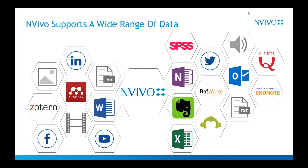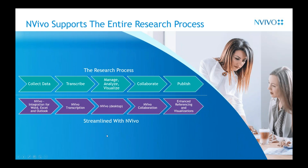I'd also like to show people all the different types of data that can come into NVivo. You have Word documents, PDF, video, audio, YouTube, social media like Facebook, LinkedIn, and Twitter. We also integrate with bibliographic software like Zotero, Mendeley, RefWorks, and EndNote, and integrate with Qualtrics and SurveyMonkey — or you can import a spreadsheet with survey results. We also integrate with SPSS. With our group of products, we're really trying to help you throughout your research process: collect data, transcribe, manage and analyze, collaborate, and then publish your dissertation, journal article, book, or report.